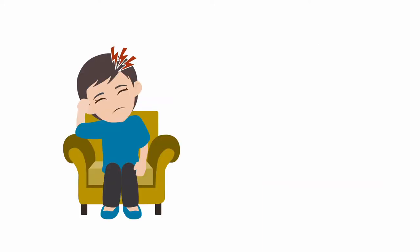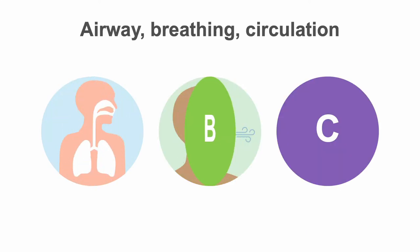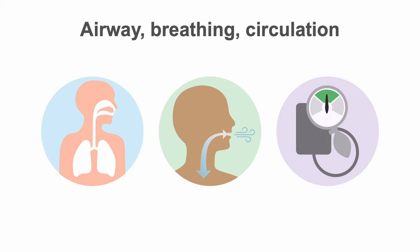Such hemorrhages can occur without warning, at rest, or during activity. Clinically, it can be difficult to distinguish an ischemic stroke from a hemorrhagic stroke. Classically, the patient may sustain a severe headache with associated nausea and vomiting and progressive neurologic deficit, or they may simply collapse into coma. But they may also present with isolated onset of new neurologic deficits, as seen with many ischemic strokes.